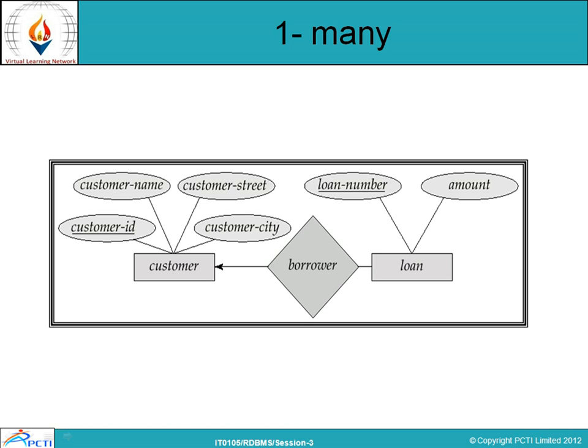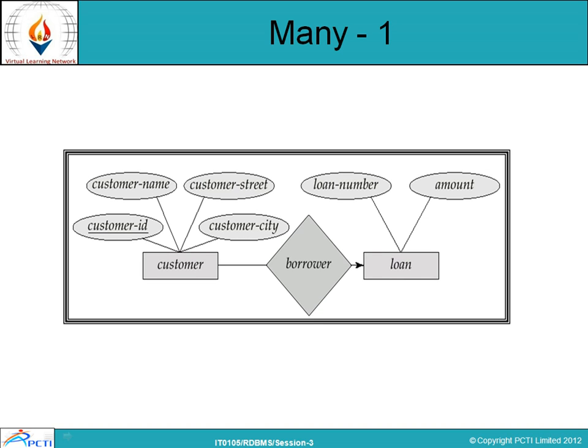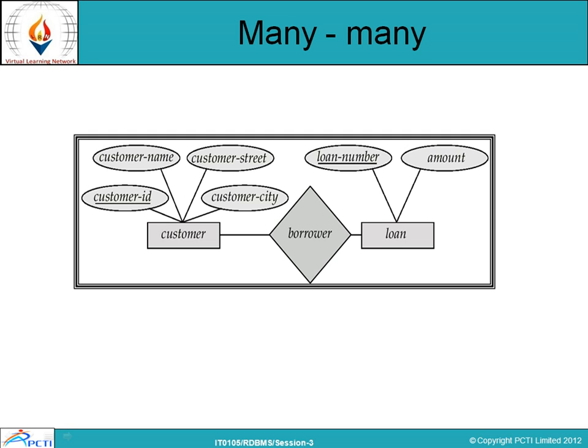Looking at the loan and customer example: the customer entity has attributes customer ID, customer name, customer street, and city, with customer ID as the unique key. The relationship between the customer and loan entity is represented by a diamond box labeled 'borrower' — the customer borrows the loan. The loan entity has attributes loan number and amount. One-to-many means one customer can take many loans; many-to-one means many customers take one loan; many-to-many means many customers take many loans.